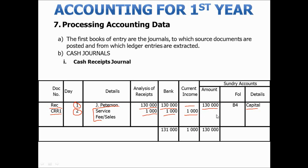At the end of the month all the totals are then added together, and our current income and sundry accounts should always equal the total that's in the bank account.